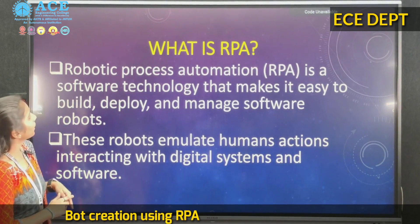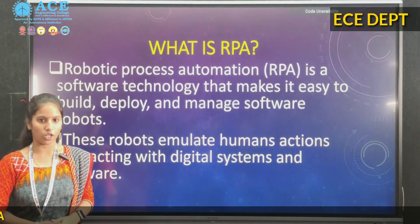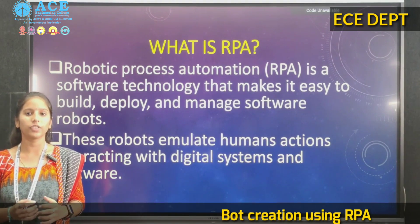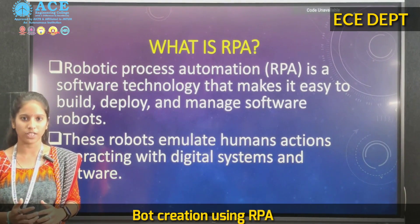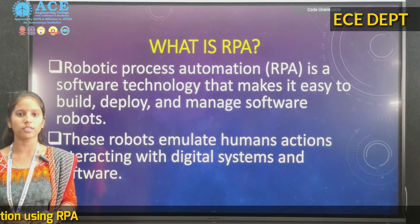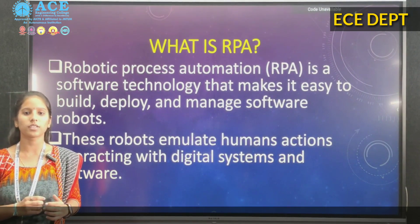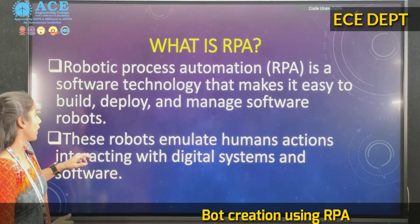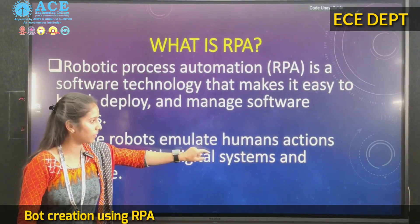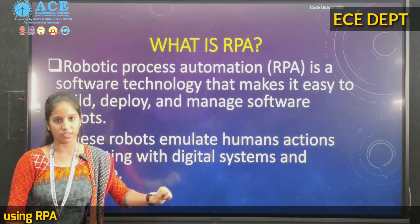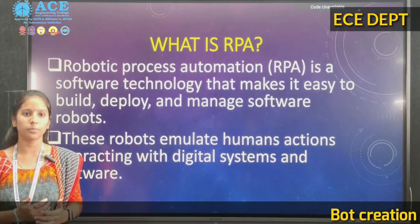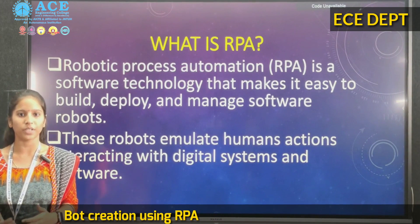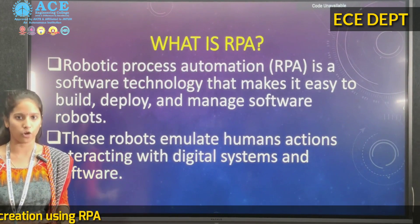RPA is basically a software technology in which we create and give simple commands to create processes. These processes are called bots. These simple bots emulate human actions — they mimic human actions step by step in the way they are performed.